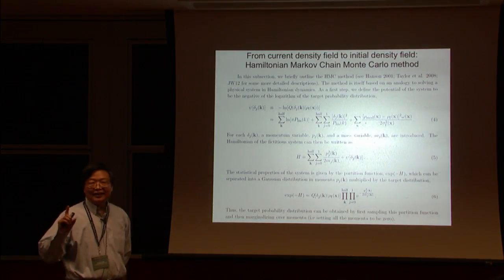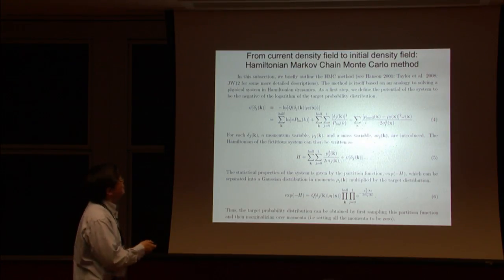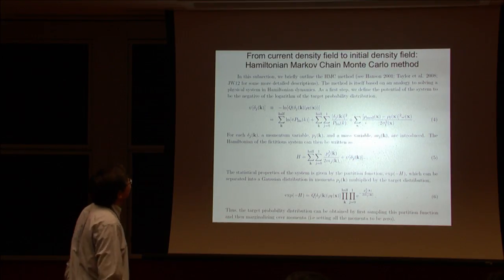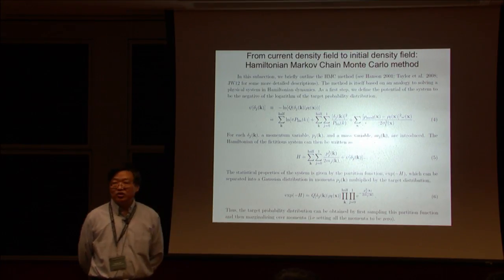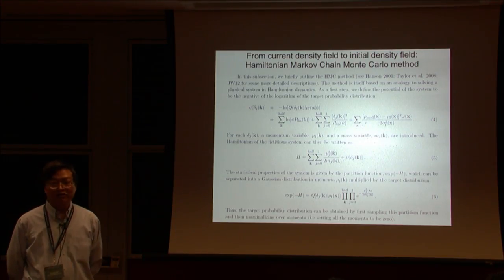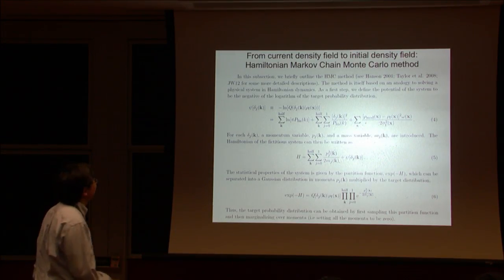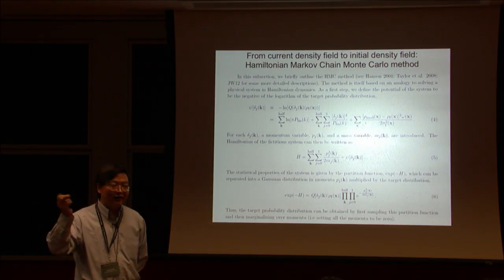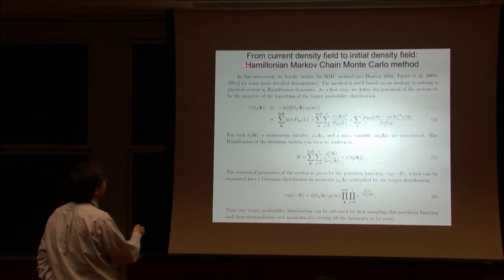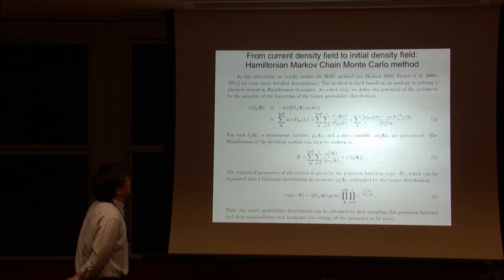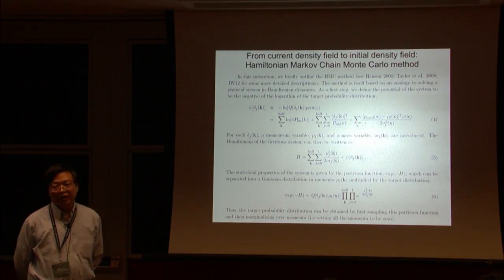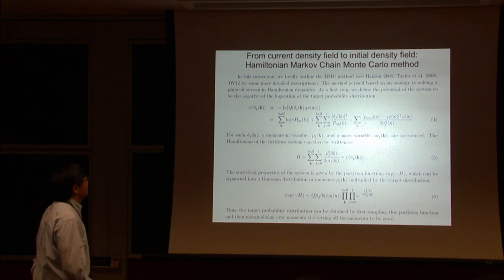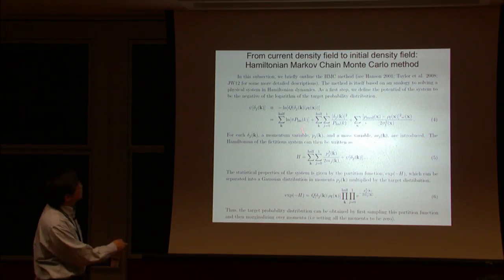First of all, let's do step by step. Suppose I know the current density field, say from n-body simulations, perfect. Can I reconstruct the initial density field? People have tried that. Here, I will describe a scheme developed by these people, collaborators, the so-called Hamiltonian Markov chain Monte Carlo. I will also tell you what kind of improvement our group has made.